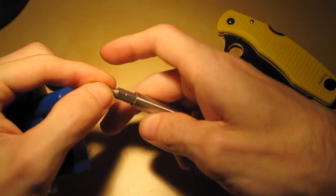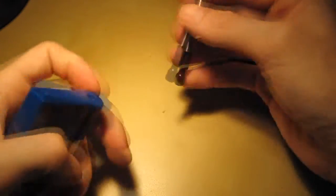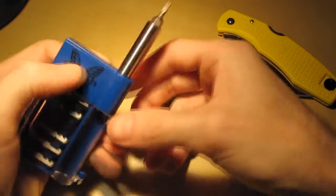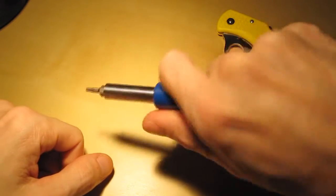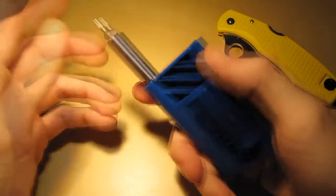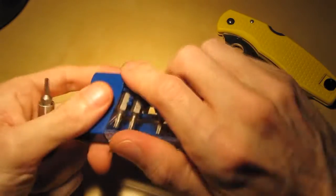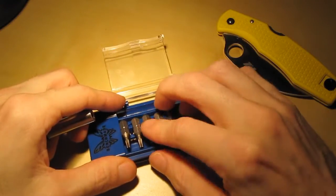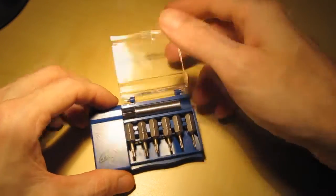You put the bit in the extension, elementary stuff here. Then you drop it down there like that, and now you've got your driver. You can pretty much adjust all your screws. So I thought that was kind of neat, a handy little thing to have around if you don't have your whole torx set or whatever.